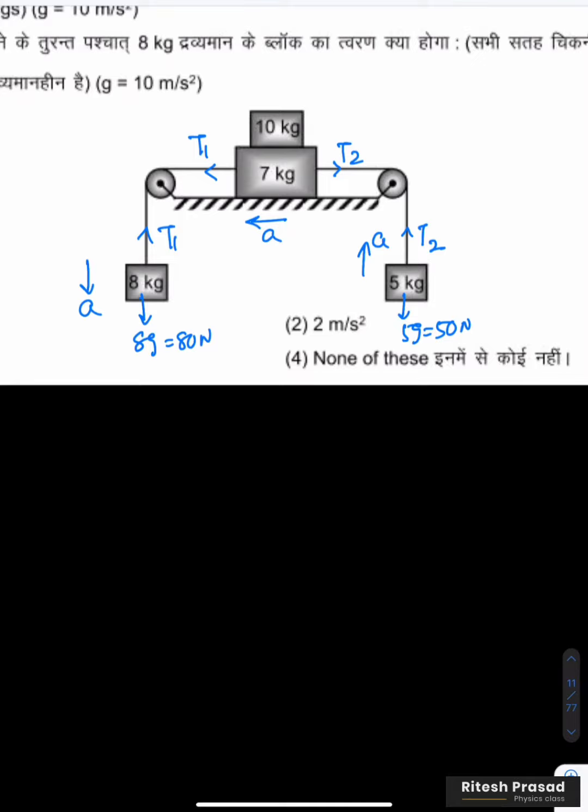So now we have to write here net force is equal to ma, which is for 8 kg, 5 kg and 7 kg. We have to write net force equals ma. So first 8 kg, downward force 80 minus upward force T1 is equal to 8a. Then 5 kg, upward force T2 minus 50 is equal to 5a.